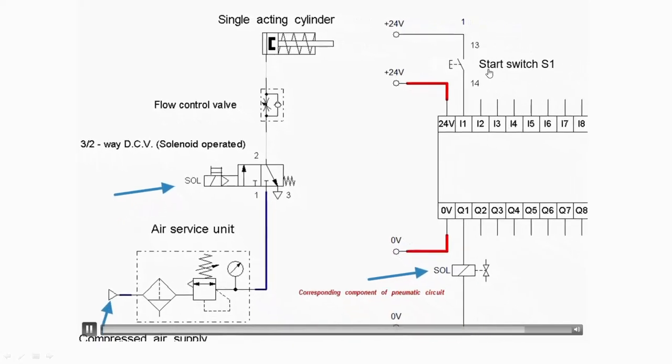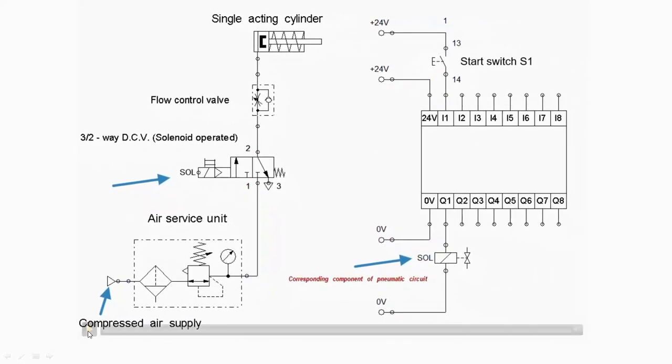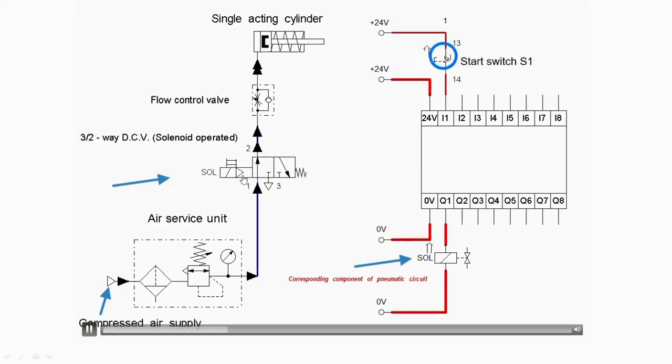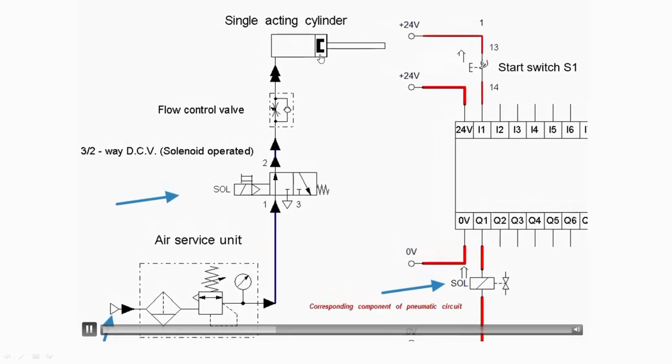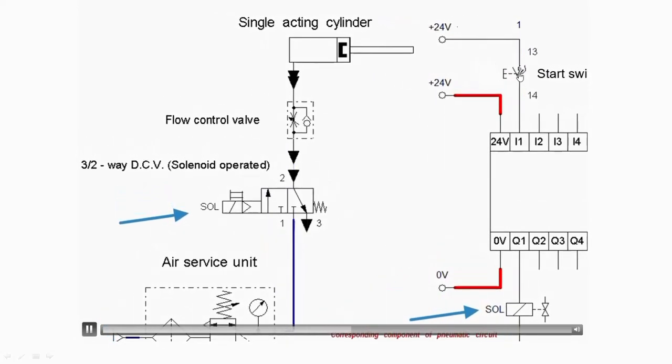So as you can see by default it is in the right envelope mode. When the switch is pressed it will get shifted to left envelope mode and the forward stroke starts. When it is released again it will be in the right envelope mode and the return stroke starts.